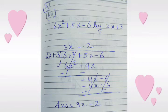Plus 5x minus 9x gives minus 4x, and plus 6x squared minus 6x squared cancel.